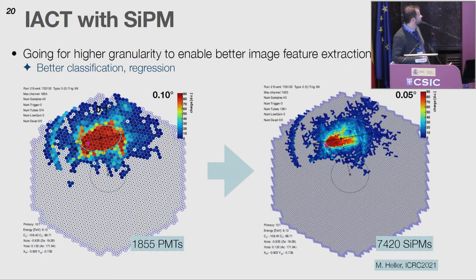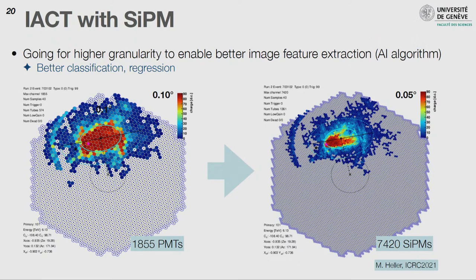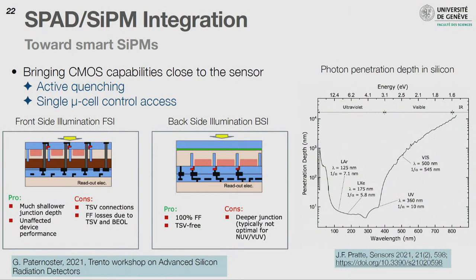Yesterday there was a question about how to build future detectors while being aware of what future analysis techniques can provide. This is what we are also trying to do for the potential upgrade proposal for the large-size telescope camera featuring silicon photomultipliers. A simulated 1 TeV proton event shows: on the left, the current LST camera with 0.1° field-of-view SiPM pixels gives a large blob; at 0.05°, you can already start resolving many more features and extracting much more information.